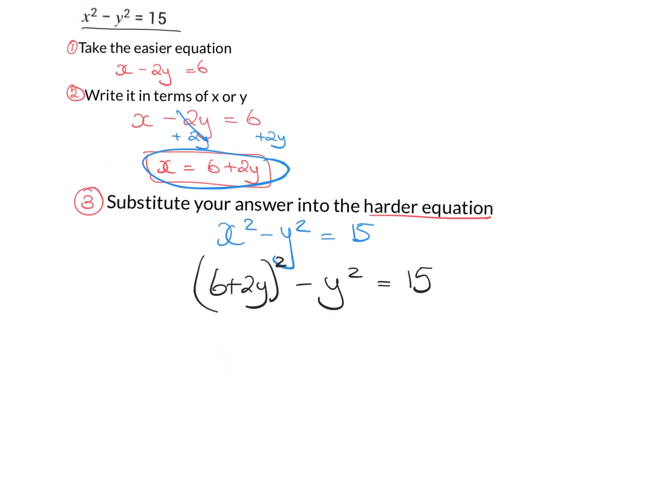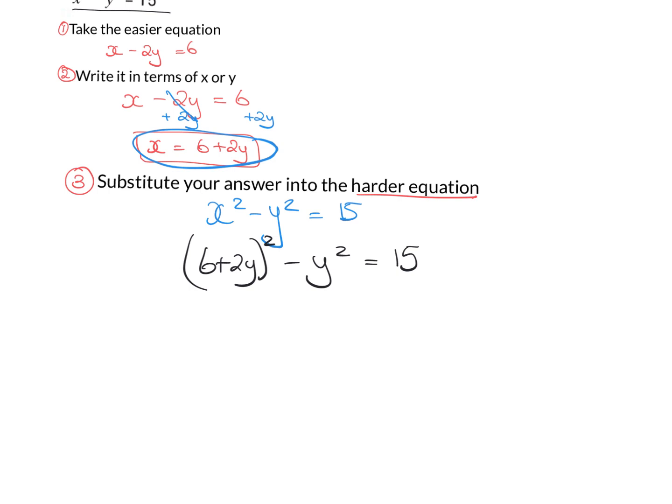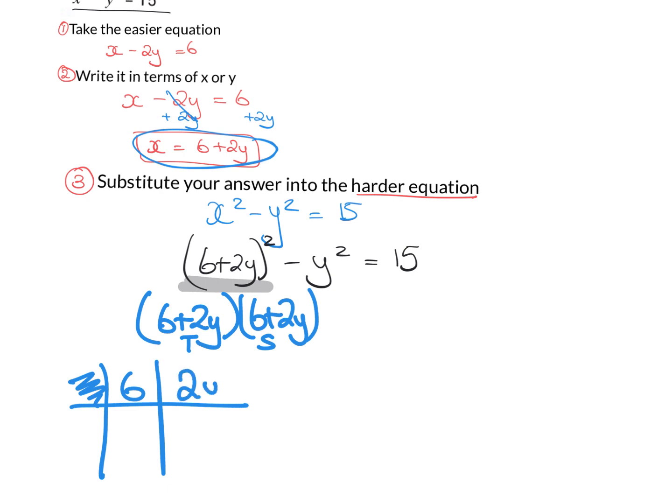So at this point guys, I am going to have to do a little bit of working out. So I'd hope you'd recognize that 6 plus 2y squared is actually 6 plus 2y by 6 plus 2y. So I'm going to go away now and I'm going to work this out. So I like to do this by box multiplication. So top and side. So I have a 6 on top and I have a 2y. And on the bottom, I have a 6 and a plus 2y.